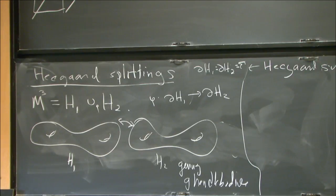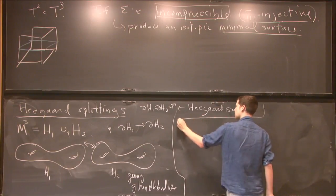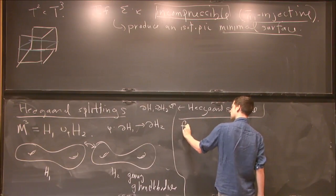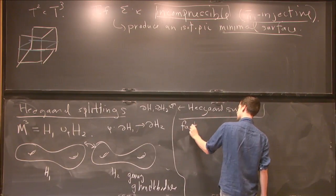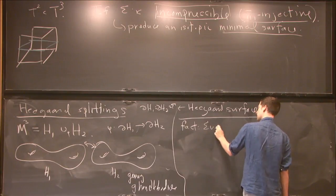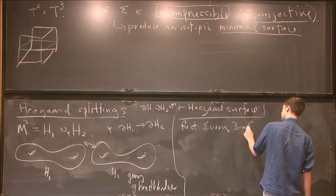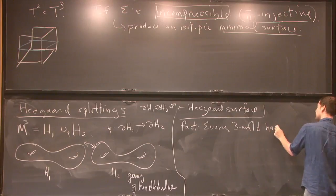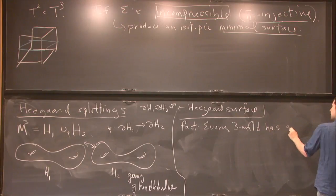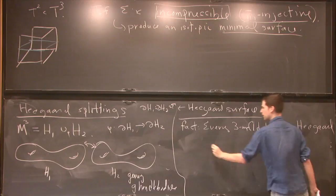When we make that identification the two boundaries are identified, and this resulting surface is called the Heegaard surface. It's a fact — not obvious — that every three-manifold has such a decomposition, i.e., a Heegaard splitting.